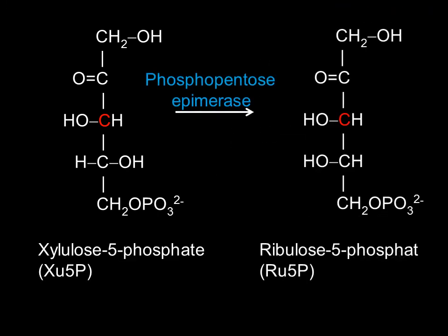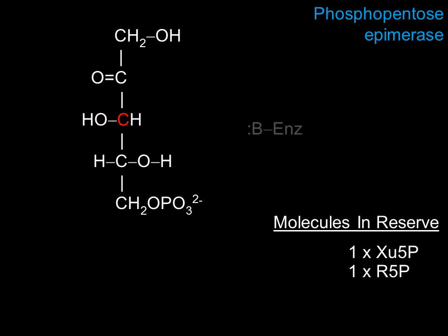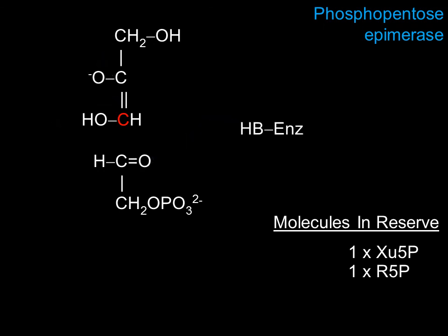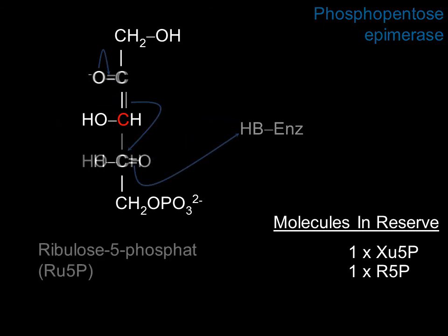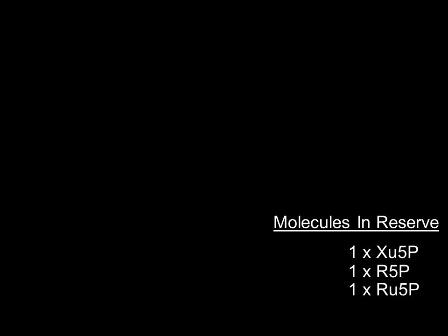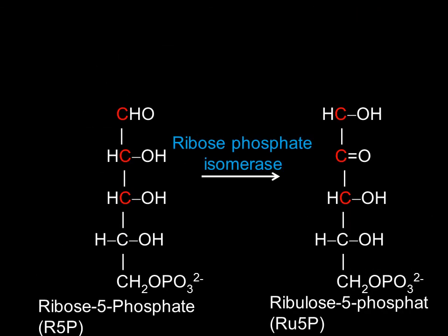The two xylulose-5-phosphates are each converted into ribulose-5-phosphate by phosphopentose epimerase. The final reaction converts ribose-5-phosphate to ribulose-5-phosphate, utilizing ribose phosphate isomerase.